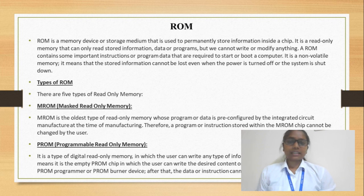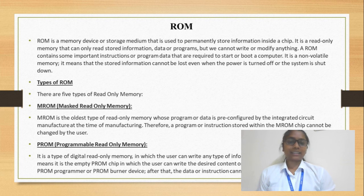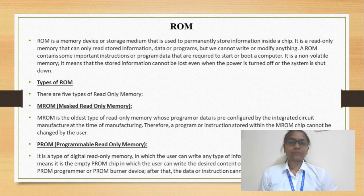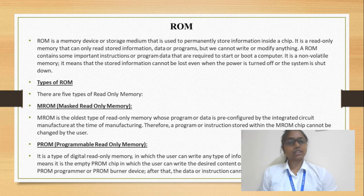There are different types of ROM: MROM, PROM, EPROM, and EEPROM. First, MROM means Mask Read Only Memory. In MROM, we cannot read or re-program it because it is pre-programmed by the manufacturer. This is inexpensive and is the first type of ROM.